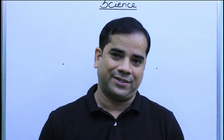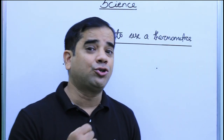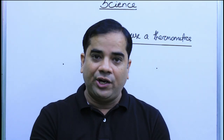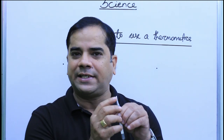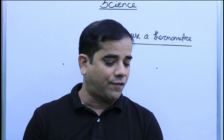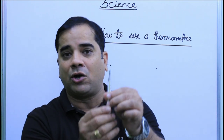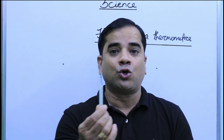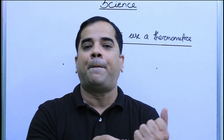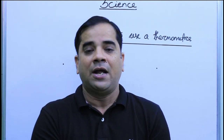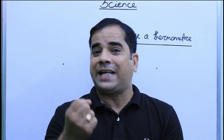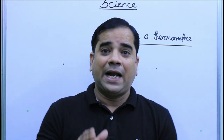Let us now discuss how to use a thermometer. The bulb of the clinical thermometer contains mercury. To measure the temperature of, for example, your palm, the mercury has not yet expanded because we are not measuring anything — it stays inside the bulb. Place the bulb against the palm and hold it for at least two minutes. The bulb absorbs the heat energy of the body and mercury starts expanding.